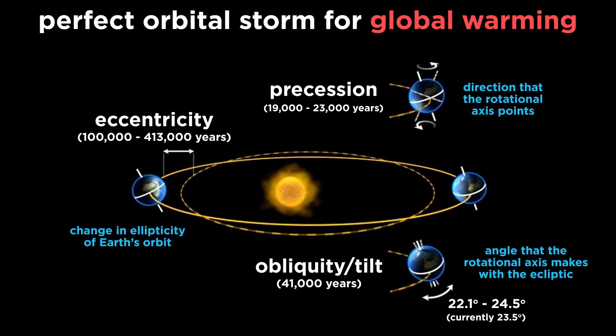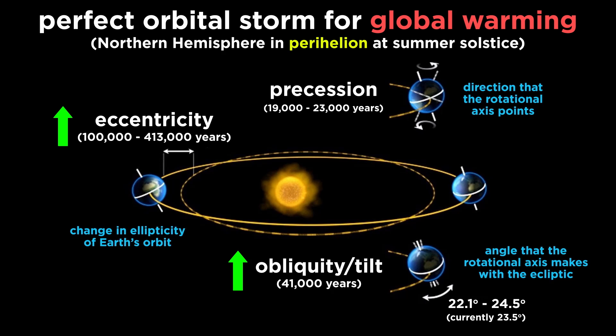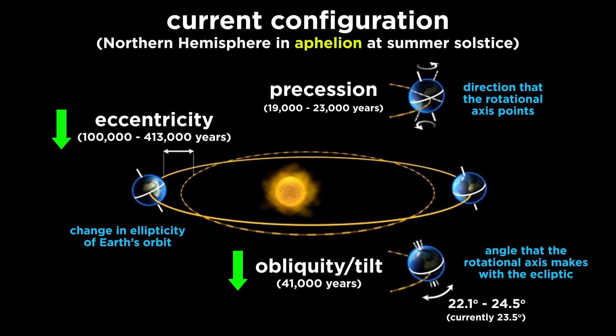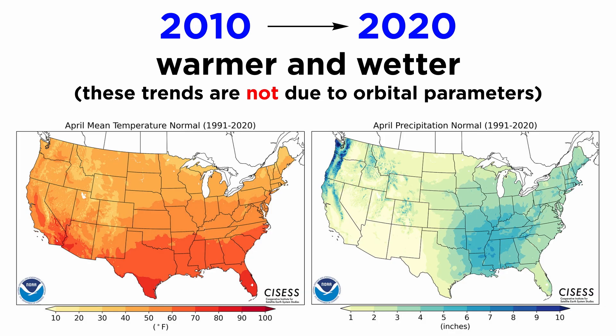A perfect orbital storm, so to speak, for global warming would require Earth's orbit at its highest eccentricity, Earth's axial obliquity at its highest, and the northern hemisphere in perihelion at summer solstice. Rather, in our current configuration, Earth's northern hemisphere currently experiences its summer in aphelion, the planet's obliquity is currently on the lower end, and the orbit is fairly circular. In fact, the current organization of Earth's orbital features should result in cooler temperatures, but instead the average temperature of the planet is on the rise. Thus, we cannot attribute current climate trends to orbital parameters.